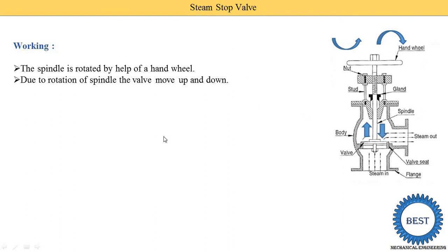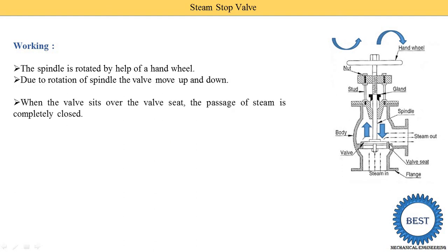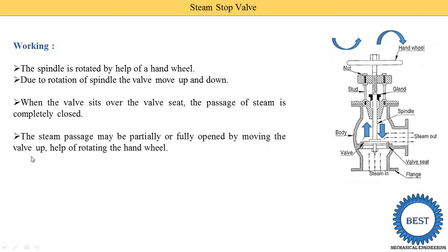Due to the rotation of the spindle, the valve either moves up or down depending on the direction — clockwise or anti-clockwise. When the valve is seated on the valve seat, the passage of steam is completely closed — no steam is supplied towards the outlet. The steam passage may be partially or fully opened by moving the valve upward by rotating the hand wheel.